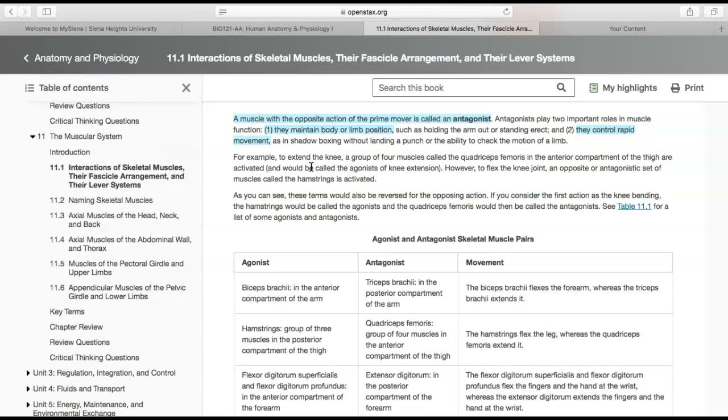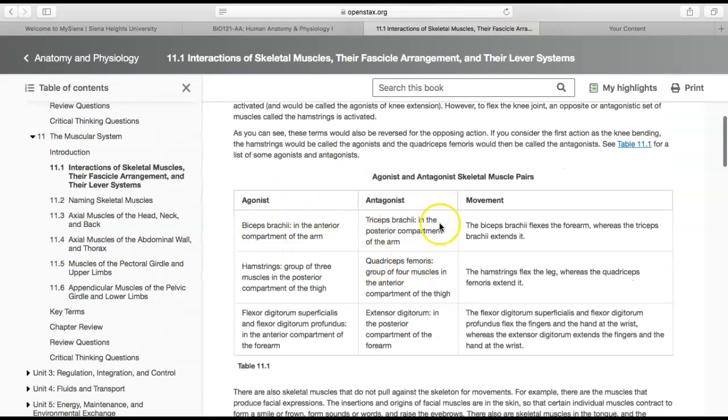But if I was to talk about kicking your butt back first, I could call the hamstrings the agonist and the quadriceps femoris the antagonist. Whatever movement you want to talk about can change which words you use to describe it, and that's listed right here.